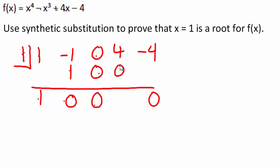Multiply it by the box number, you still have 0. Add it down the column, you get 4. Multiply it by the box, you get 4. And when you add down the column, you do get 0. So that checks out. 1 does give us a root for this function.